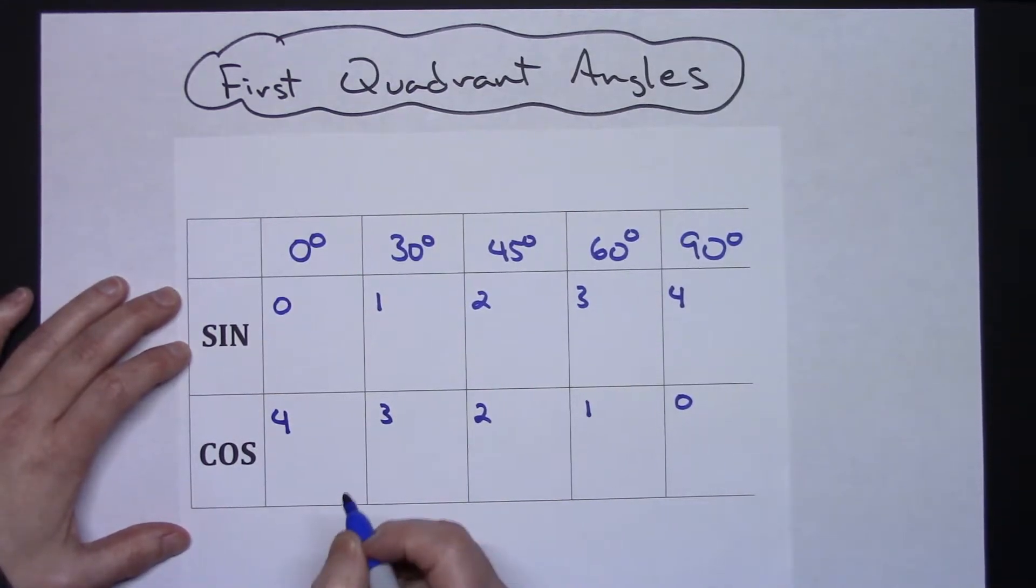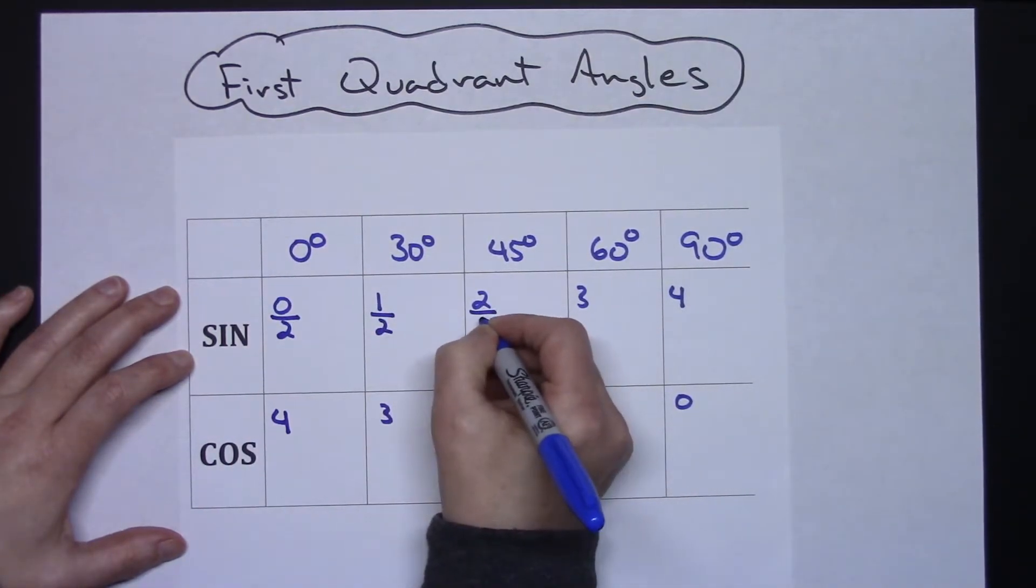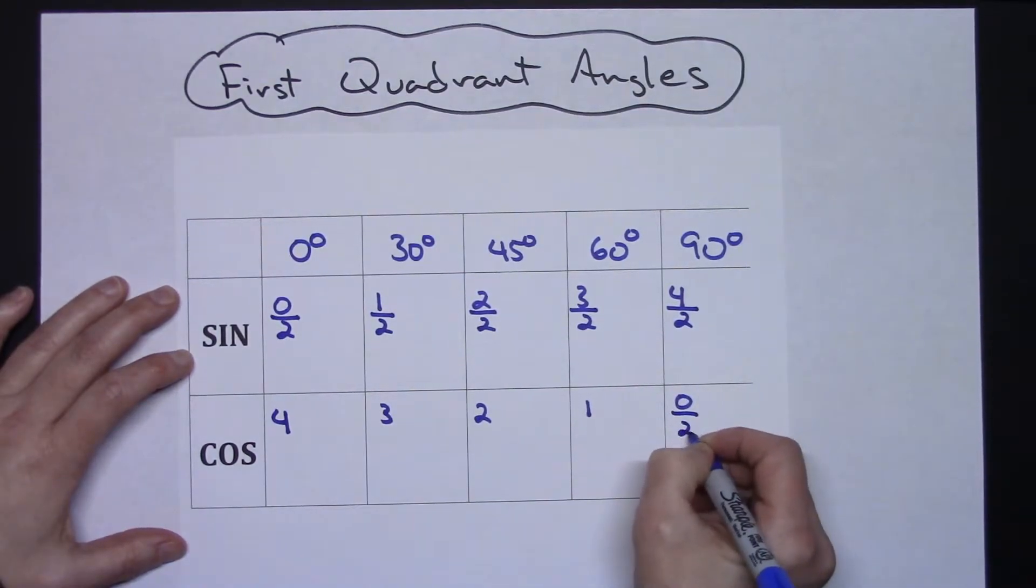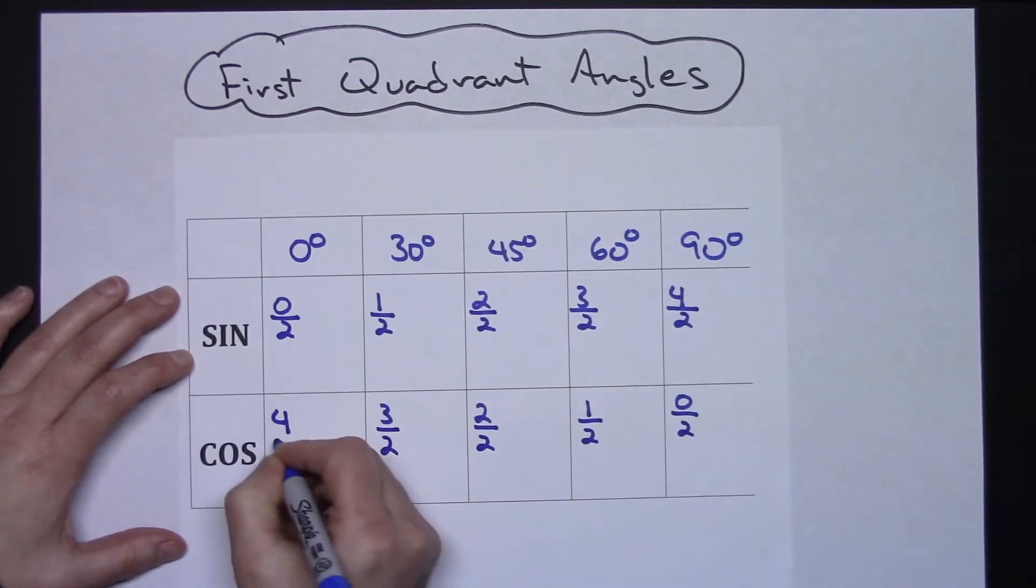And then next you're going to go through and divide each of them by two. So divide by two on every one of the numbers that you just wrote down. Not hard to memorize, dividing by two.